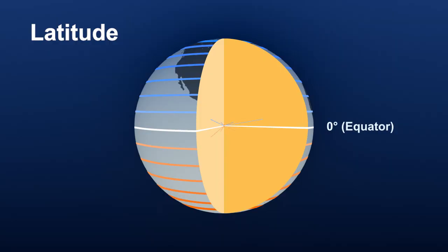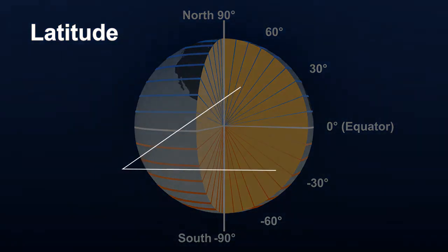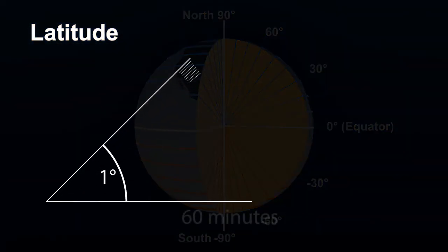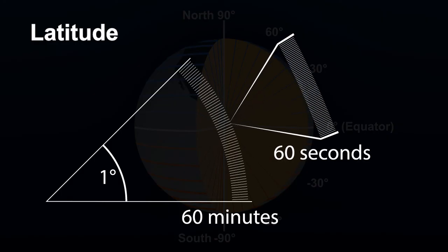The equator is located at 0 degrees latitude. Lines of latitude start at 0 degrees at the equator and end at 90 degrees at the north and south poles. The north pole is located at north 90 degrees, while the south pole is located at south 90 degrees, also shown as negative 90 degrees. Each degree of latitude can be broken down into 60 minutes, and each minute can further be broken down into 60 seconds. The parallels are always an equal distance apart, so we can calculate that each second of latitude is about 30 meters.